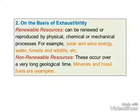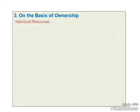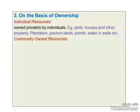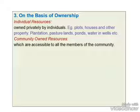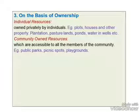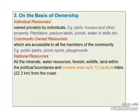The third classification of resources is on the basis of ownership. It is divided into four: first, individual resources — plots, houses, property, plantations, etc. Second, community resources, which are accessible to all members of the community, for example public parks, picnic spots, and playgrounds. Third, national resources — all minerals, water resources, forests, and oceanic area up to 12 nautical miles.